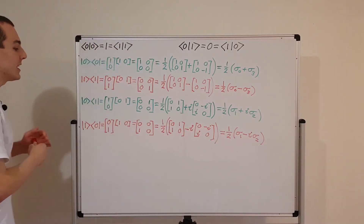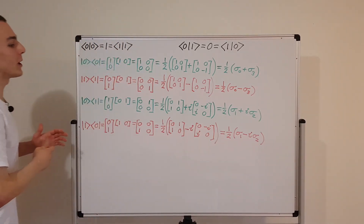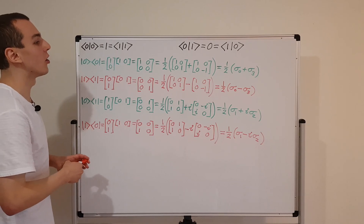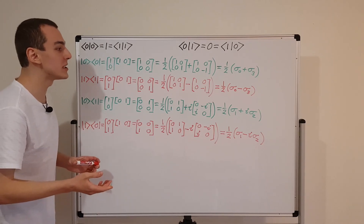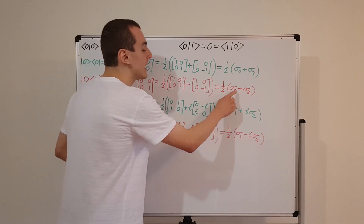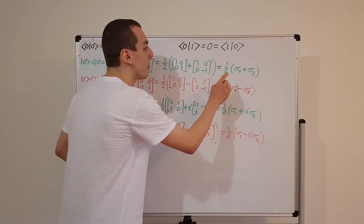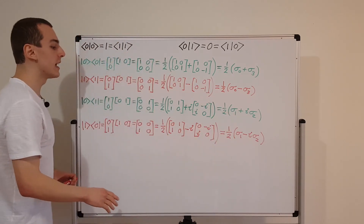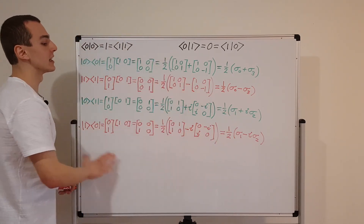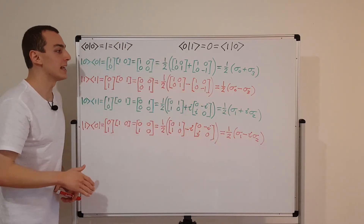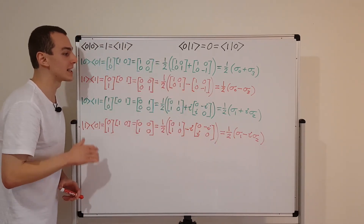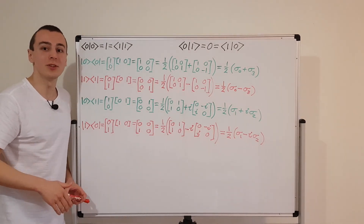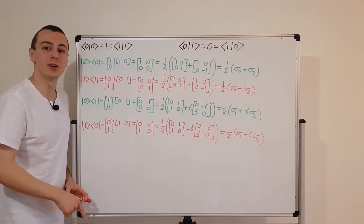In summary, this video has shown linear combinations of the Pauli matrices — including the identity matrix σ₀ — used to express the four outer product combinations of the basis vectors. These relationships, ½(σ₀ ± σ₃) and ½(σ₁ ± iσ₂), will be used later in the quantum mechanics playlist.